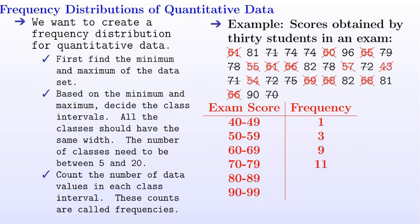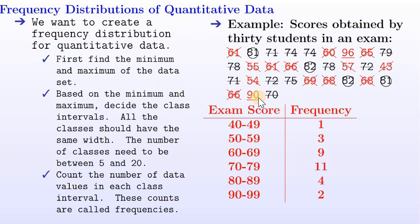There are four scores between 80 to 89, shown in circles. Finally, whatever is left are the scores between 90 to 99 — the underlined numbers are the scores in that interval. This is how you create a frequency distribution for quantitative data.